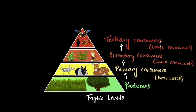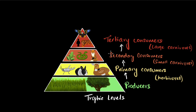Finally, we have tertiary consumers — think of them as large carnivores. They are at the top of the food chain, the apex predators: humans, tigers, eagles, and so on. These are the trophic levels — level one, level two, level three, level four. In some cases you can have more levels, up to five or six.